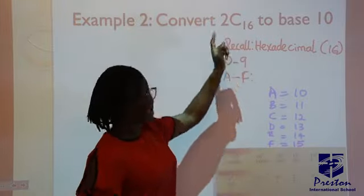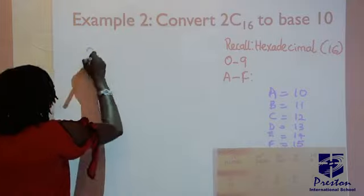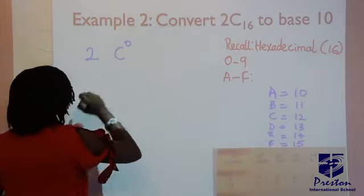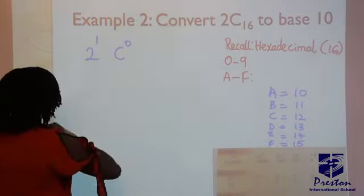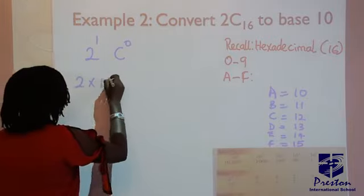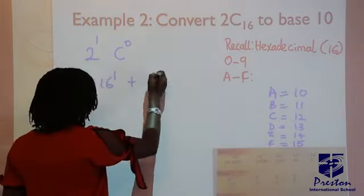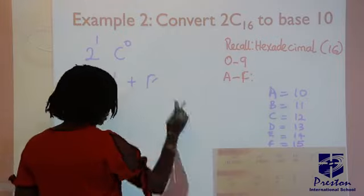So when we are solving, we're going to replace this C with 12. So let's quickly do that. First, place the power here. We have those two digits, so we have 0, 1. And the next is 2 times 16 raised to power 1, plus...